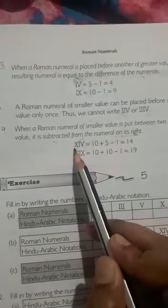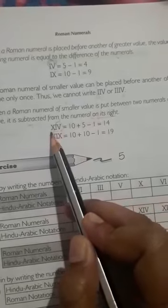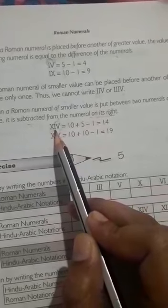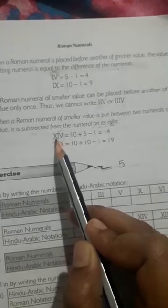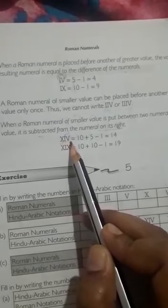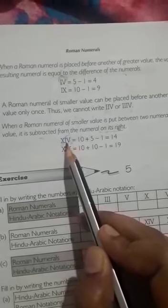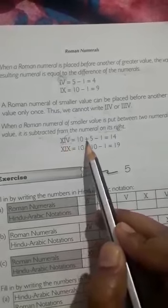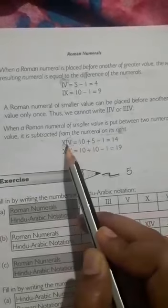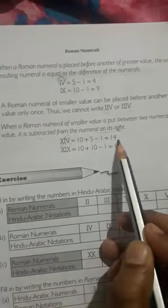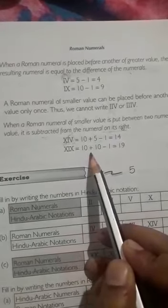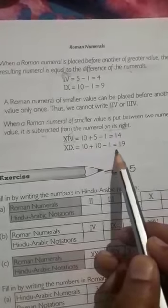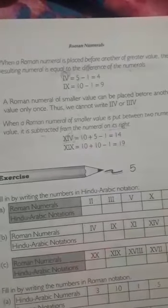For example, XIV—I is put between two numerals of greater value. XIV is equal to 10 plus 5 minus 1, equals 14. XIX is equal to 10 plus 10 minus 1, equals 19.